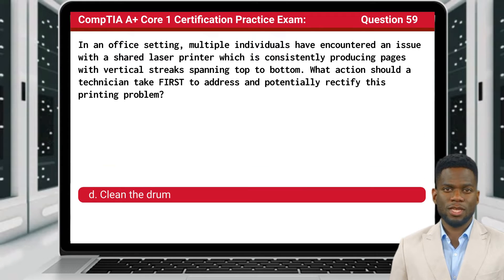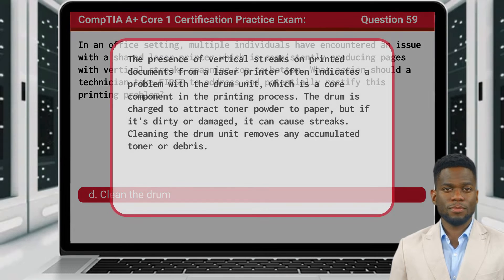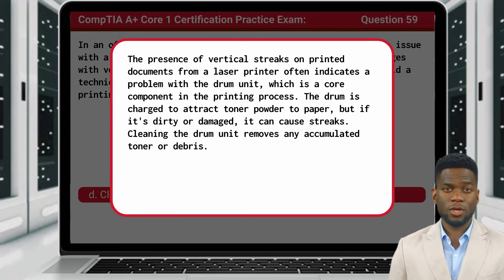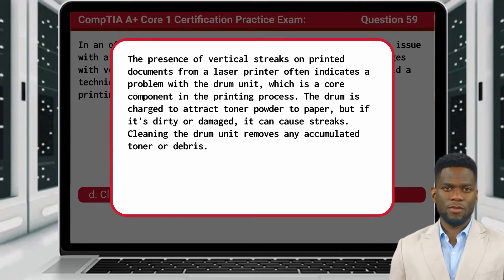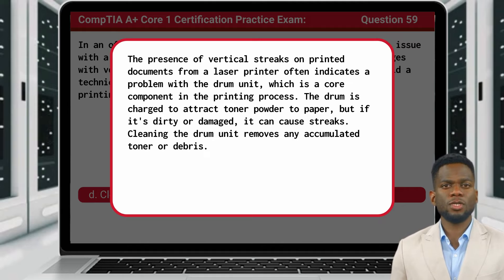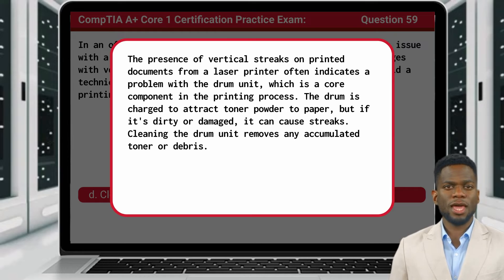The answer is D: Clean the drum. The presence of vertical streaks on printed documents from a laser printer often indicates a problem with the drum unit, which is a core component in the printing process. The drum is charged to attract toner powder to paper, but if it's dirty or damaged, it can cause streaks. Cleaning the drum unit removes any accumulated toner or debris.